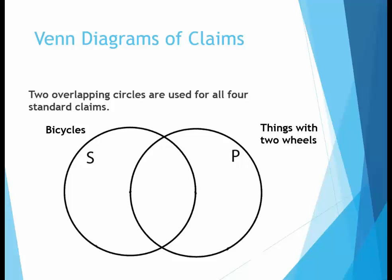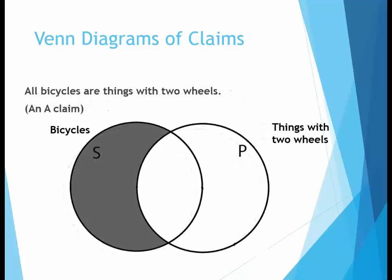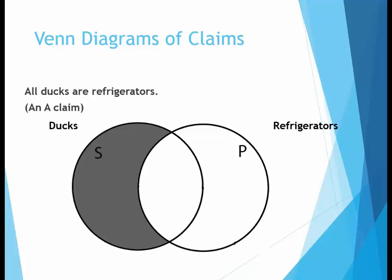Now let's look at the Venn diagram for an A claim. In Venn diagrams, the part of a category where there are no examples is shaded. This indicates that the only bicycles there are are bicycles that are part of the P category — the category of things with two wheels. So the left side of the S circle is shaded to indicate it is empty. This is the diagram for A claims, and the Venn diagram for all A claims will look exactly the same — it doesn't matter what the terms are or whether the claim is true or false.